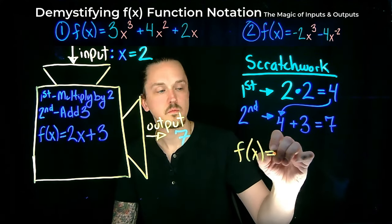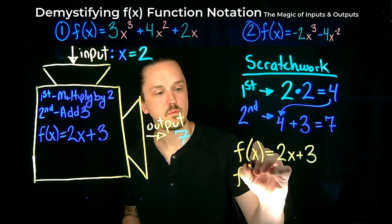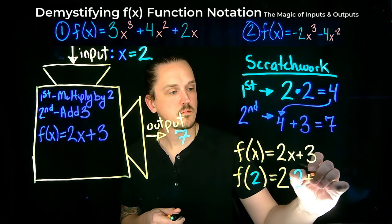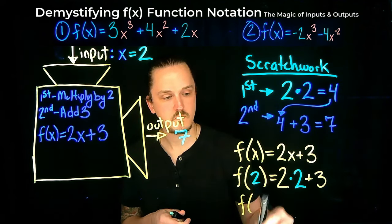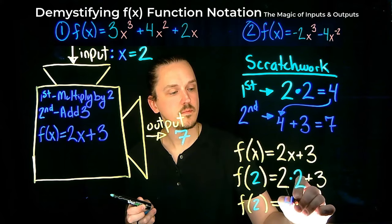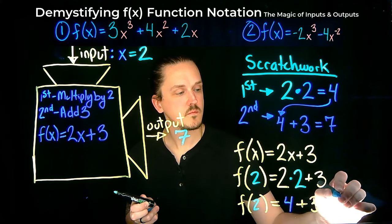This process is what the notation f of x is capturing. It's a systemic way to describe how we're transforming our input into an output with a given set of instructions telling us exactly what our machine is to do step by step.